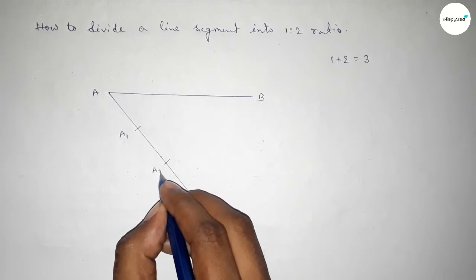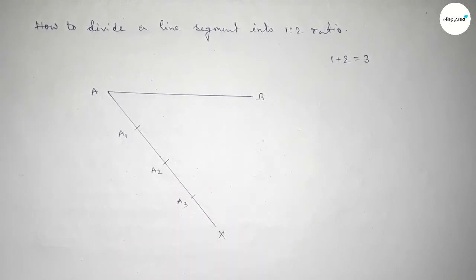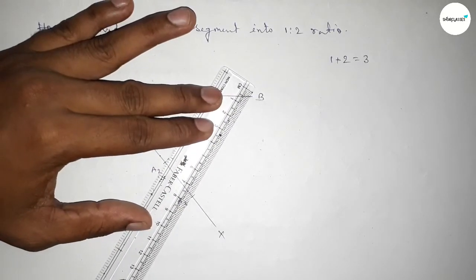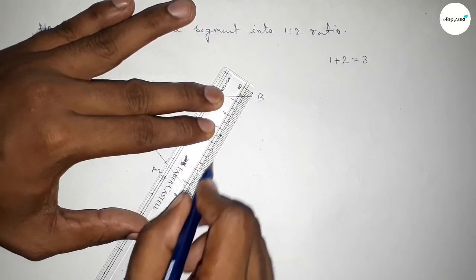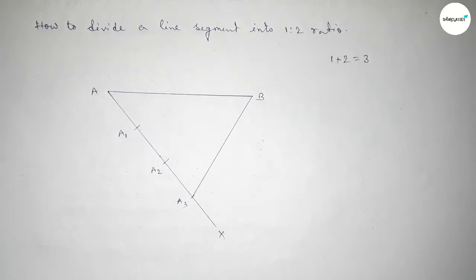Next, joining A3 B first. So first joining A3 B line. Next we have to draw a parallel line with A3 B at the point A1.